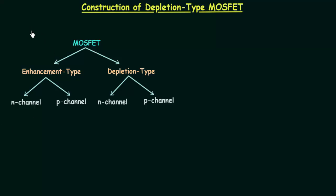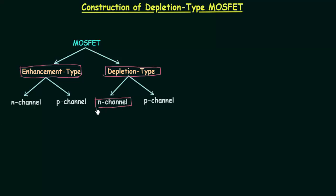We have already completed the construction and characteristics of enhancement type MOSFET. Now we will see how depletion type MOSFET is constructed. Out of n-channel and p-channel, we will see the construction of n-channel depletion type MOSFET, and once we understand that, we can easily relate how p-channel depletion type MOSFET is constructed.